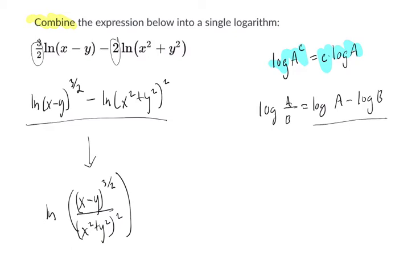It depends if you want to apply the root sign or not. In this case, let's look at 3 halves. That means you're cubing it and taking the square root. So you could rewrite this as the natural log of x minus y cubed and square rooted over x squared plus y squared squared.